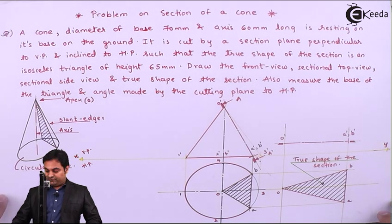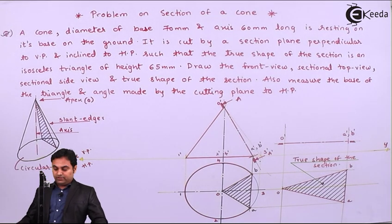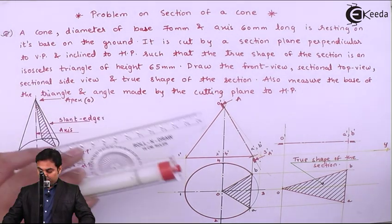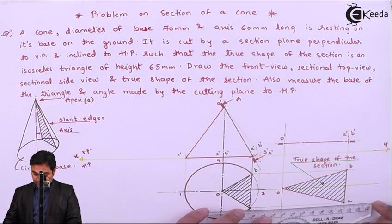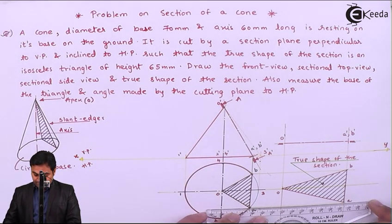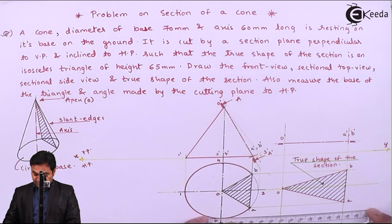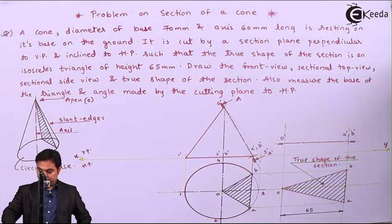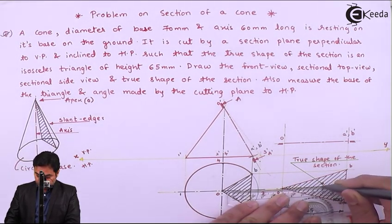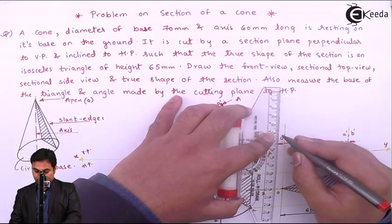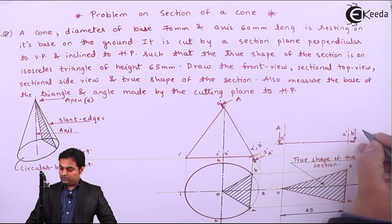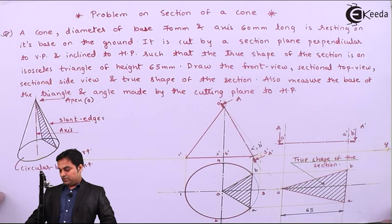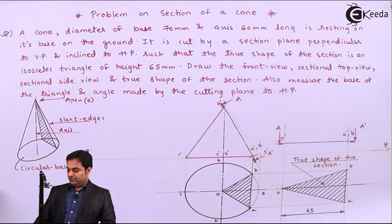This is the true shape of the section, and here the height is 65 mm as given in the problem. A-A' is the cutting plane. We are also getting the base edge from this construction.